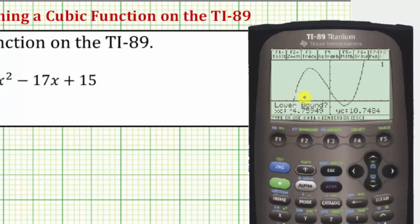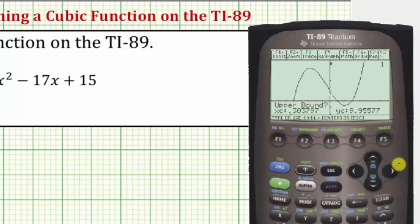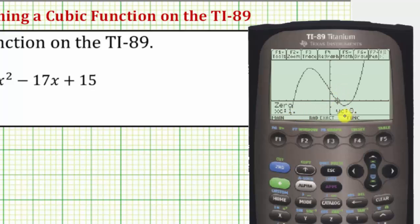Lower bound again would be to the left of this horizontal intercept. So let's press the right arrow and scroll to the right. Notice how we're still to the left of this horizontal intercept, so we'll press enter. Upper bound would be to the right of this horizontal intercept — press enter. The coordinates of this intercept are one comma zero.